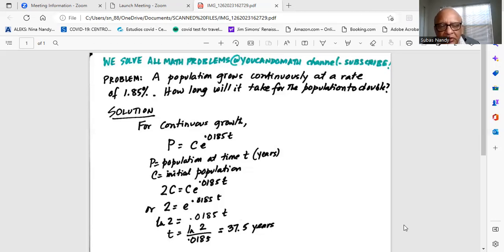So we want to solve for T. So we divide by 0.0185 on both sides to get T is equal to ln 2 divided by 0.0185 which is 37.5 years. So if the population is growing at 1.85% annually, it will double in 37.5 years.